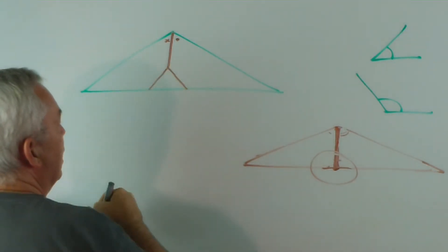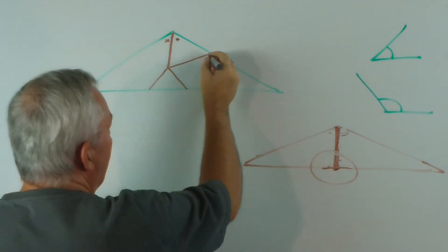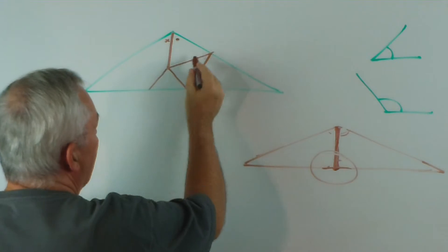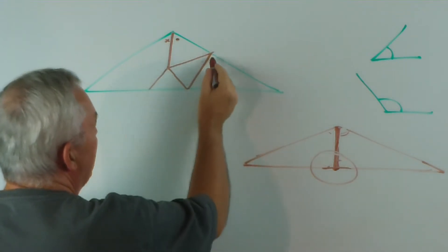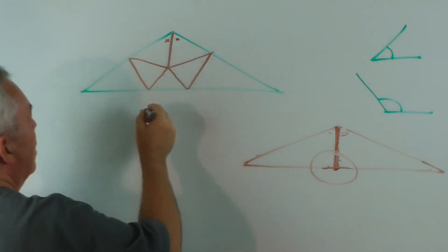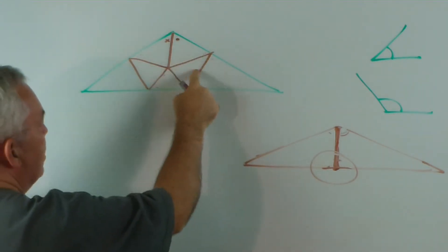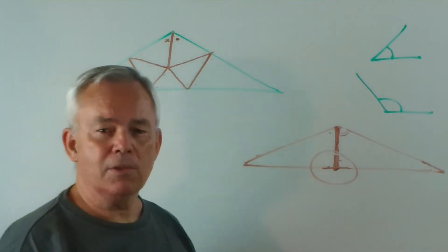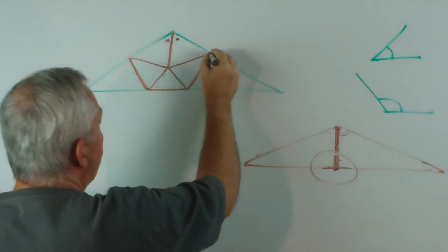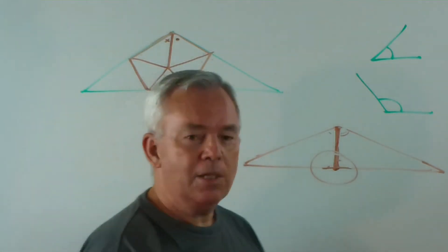We now have these two obtuse angles. If we divide them and join these — I hope you can see these are all acute. These are all acute, these are all acute, and these are all acute. And we do the same out this side: three acute angles, three acute angles, three acute angles, three acute angles — one, two, three, four, five, six, seven acute angle triangles. So basically, by placing a pentagon in the middle, we've managed to solve our problem.